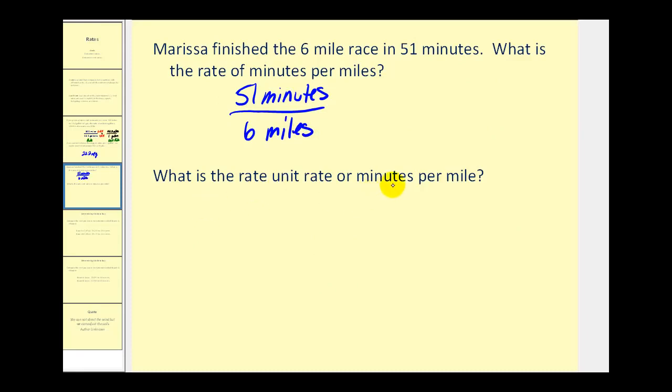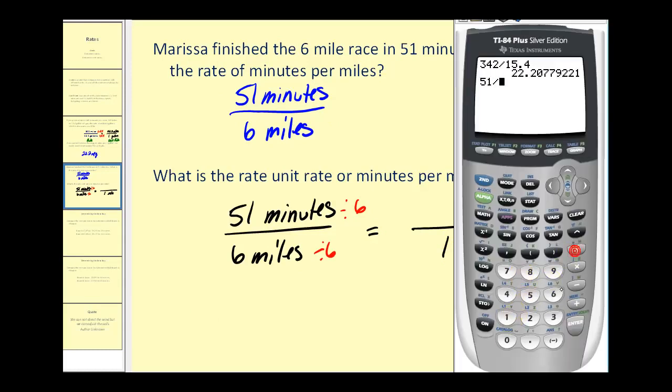If we want to know the unit rate or minutes per one mile, we would take this rate and rewrite it with a denominator of one mile. So we'll divide this by six, that would give us one mile. And we'll do the same to the numerator. So 51 divided by six will tell us how many minutes per one mile. Looks like we have 8.5 minutes per one mile.